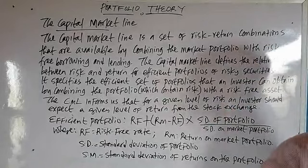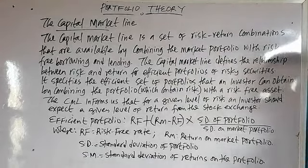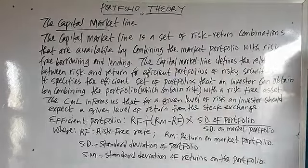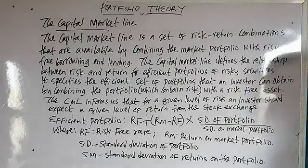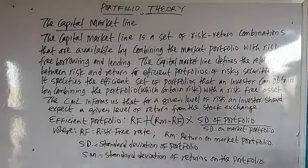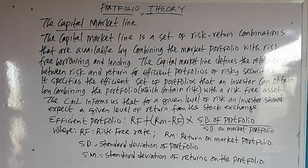You have different sets of securities which you want to invest in. You combine these securities into different portfolios. A portfolio is a collection of investments — the total holdings of an investor. You create Portfolio A, Portfolio B, Portfolio C, Portfolio D, and so on. In each portfolio, you look at which one gives you the best combination — the highest return with the lowest risk. Such a portfolio is called the efficient portfolio.